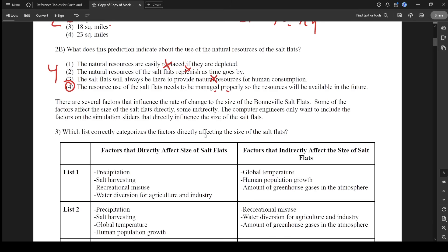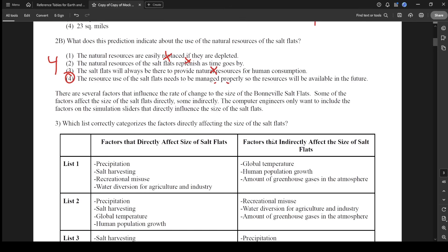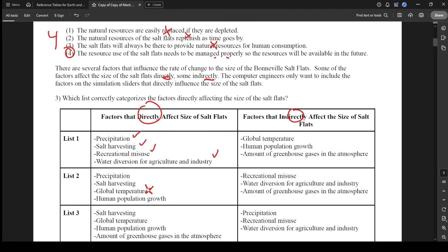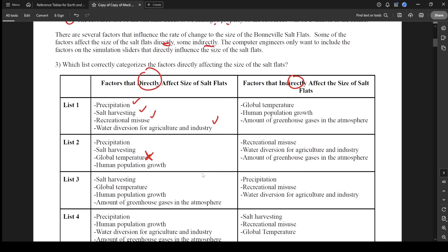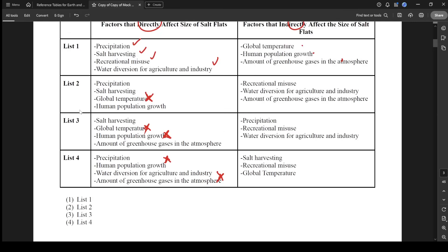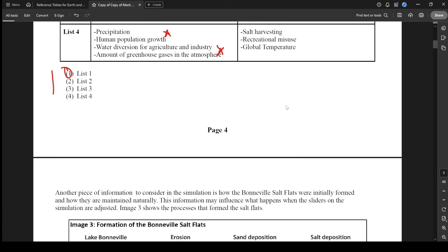Which list correctly categorizes the factors directly affecting the size of the salt flats? It's saying some factors are direct influences and some indirect influences, and they want us to organize that. So here's your direct and indirect. The direct that we said in the graph was precipitation, harvesting salts, the motorcycle riding, and the water diversion. So all those are right. They didn't say global temperature was direct, so that's going to be out. Human population growth, they did not talk about. And then they didn't say greenhouse gases. So this is all right for list one, which means the other three are indirect. So list one is going to be your strongest list.